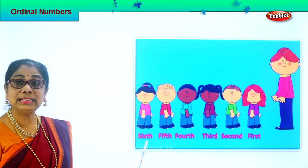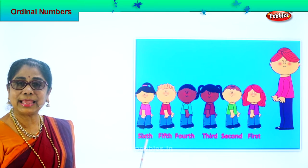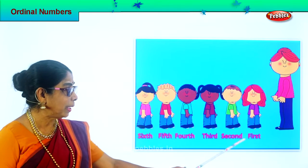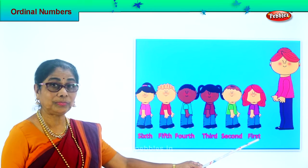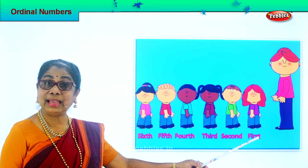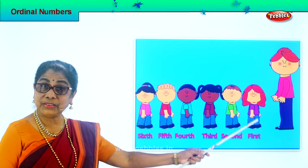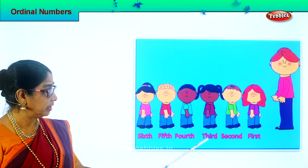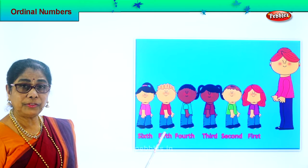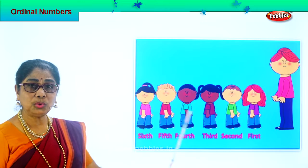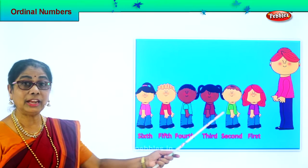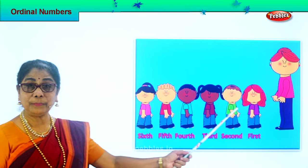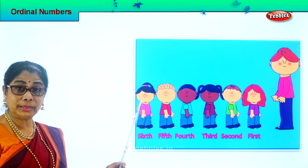And finally we have a last girl — sixth: S-I-X-T-H. Sixth. Look at the spellings; you must learn to say and write the spelling correctly: first, second, third, fourth, fifth, sixth. All the children are standing in the ordinal number system. Look here — there's order here.